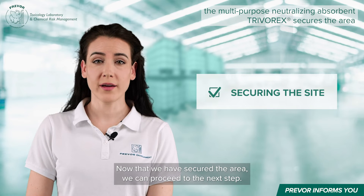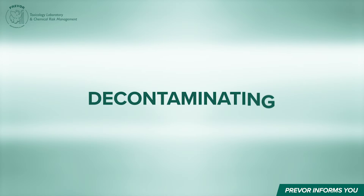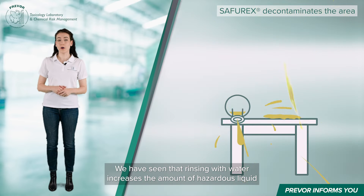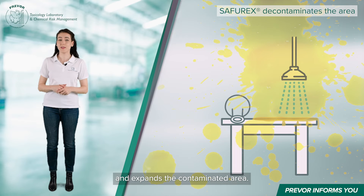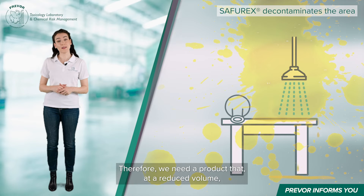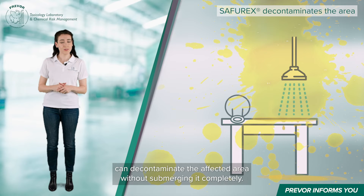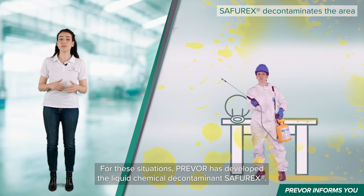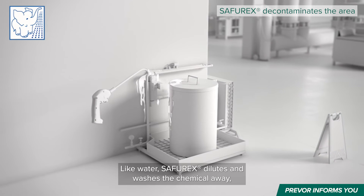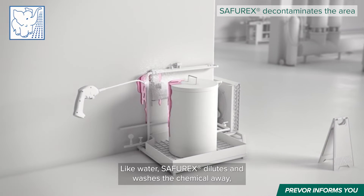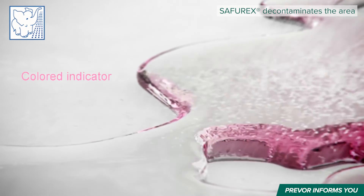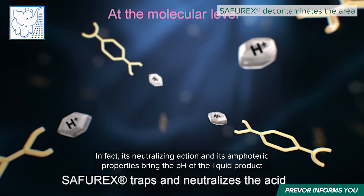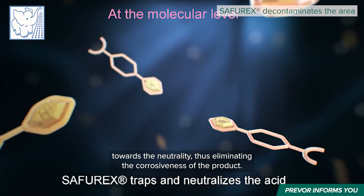Now that we have secured the area, we can proceed to the next step. We have seen that rinsing with water increases the amount of hazardous liquid and expands the contaminated area. Therefore, we need a product that, at a reduced volume, can decontaminate the affected area without submerging it completely. For these situations, Prevorex has developed the liquid chemical decontaminant Saphyrex. Like water, Saphyrex dilutes and washes the chemical away, but it also decontaminates the product actively. Its neutralizing action and amphitheric properties bring the pH of the liquid product towards neutrality, thus eliminating the corrosiveness of the product.